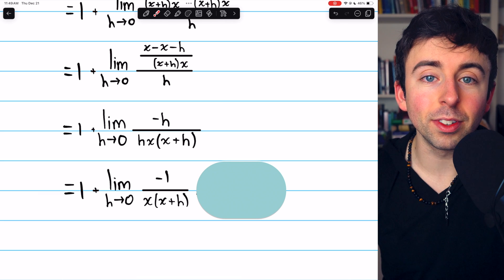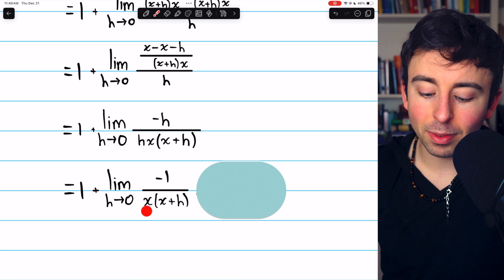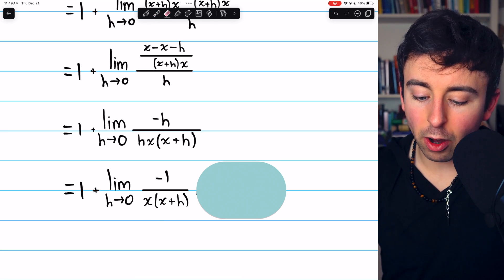At this point, we can just plug h equals 0 in. We're not going to have any problems. In the denominator, that's just going to be x times x plus 0, which is just x times x. And so we get our final answer.